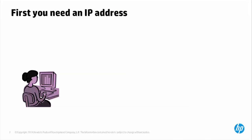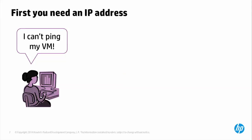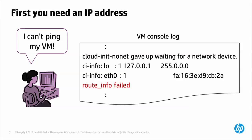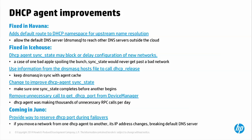Neutron server is running well. Now we're ready to fire up some VMs. Our tenant Sally is going to help us through the presentation. The first thing Sally wants is an IP address — but Sally doesn't look happy. The typical symptom: the dreaded 'route info failed' message in the VM console log, indicating the VM just didn't get its IP address from the DHCP server.